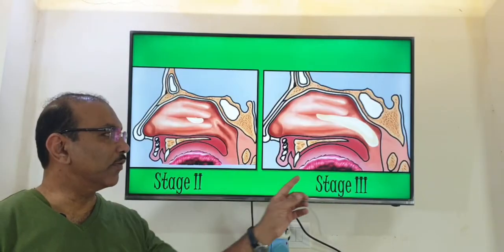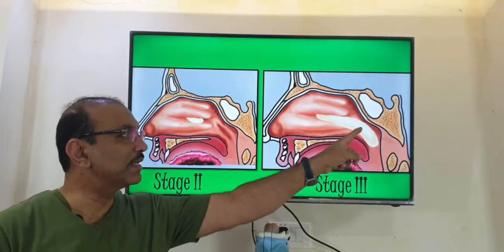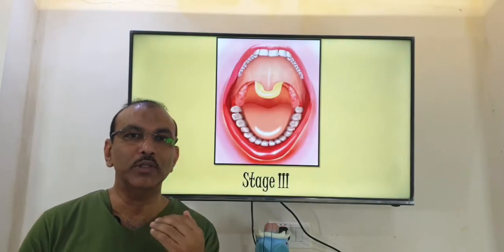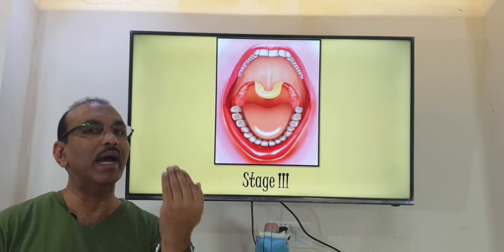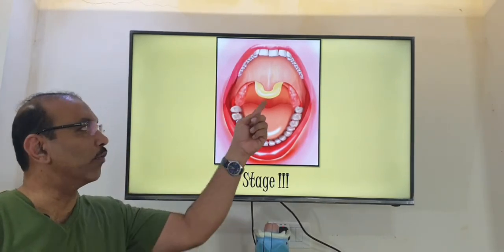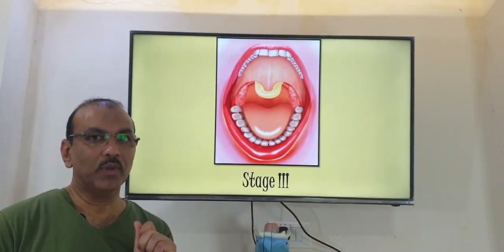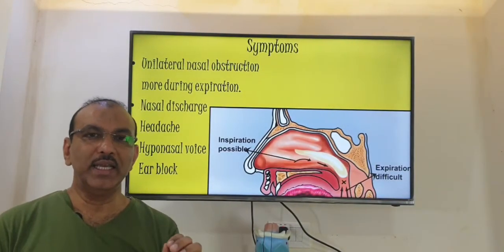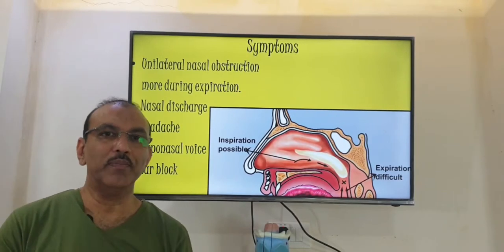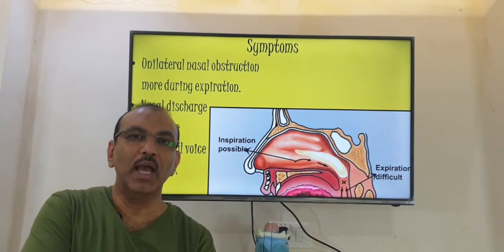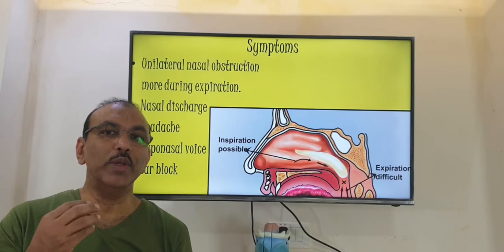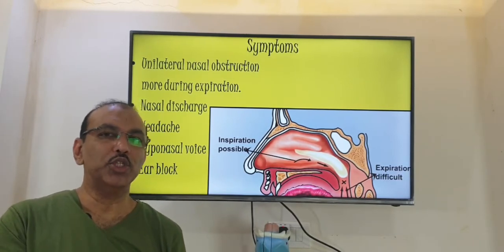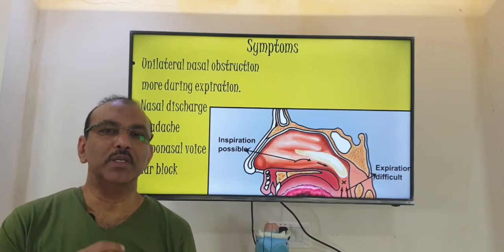The cause I have already mentioned — because of the abnormality of the opening of the maxillary sinus. Now when it reaches the third stage, it can proceed further down to the oral cavity. On opening the mouth and examining the oral cavity, that means behind the tongue, you can see the polyp hanging down from there. The patients' complaints include nasal obstruction — they are not able to breathe through that side. That obstruction is mainly during expiration, during breathing out. They are able to manage to breathe in, but breathing out becomes difficult.